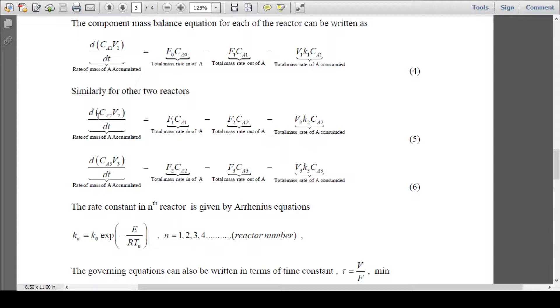Same way for reactor 2: d(Ca2·V2)/dt equals F1·Ca1 coming into the reactor, F2·Ca2 going out from the reactor, minus V2·K2·Ca2 consumed due to reaction.